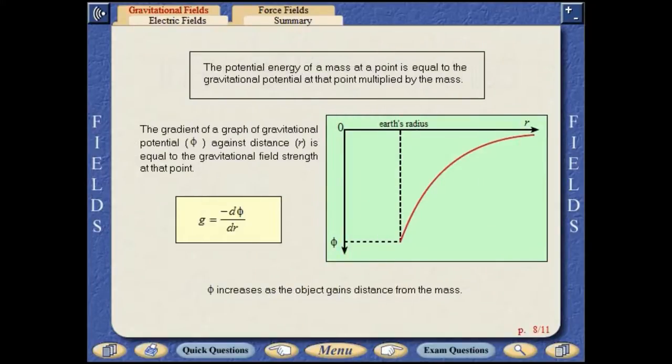The potential energy of a mass at a point is equal to the gravitational potential at that point multiplied by the mass. The gradient of a graph of gravitational potential against distance is equal to the gravitational field strength at that point.